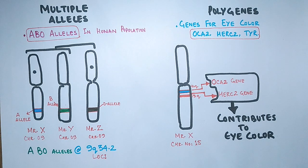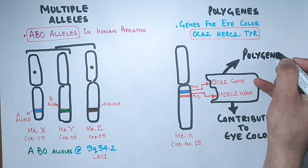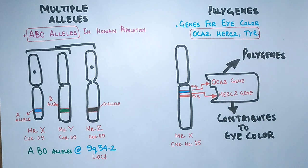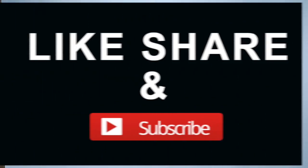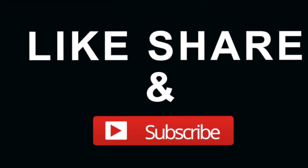So multiple alleles occur within the population and polygenes occur within the individuals also. So this is all about the difference between multiple alleles and polygenes. I hope you like the video. If you like it, give it a thumbs up and make sure to subscribe this channel. Thanks.